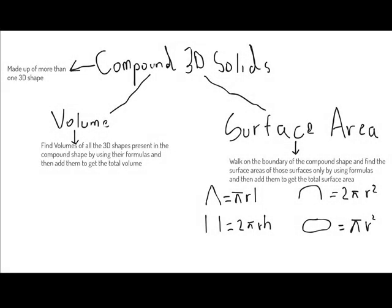Assalamu alaikum students, welcome to mathematics online class. Today's topic is compound 3D solids. In our previous classes we dealt with 3D solids and were asked to find the volume and surface area. In this class we will be dealing with 3D solids again, but this time our shape will be a compound 3D solid — meaning our shape will have more than one 3D shape. It can be a combination of a pyramid and a cuboid, a hemisphere and a cone, or a hemisphere and a cylinder.